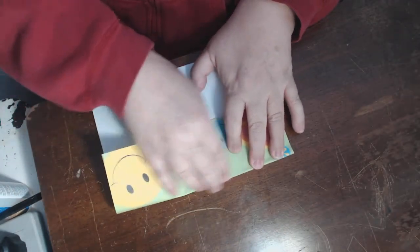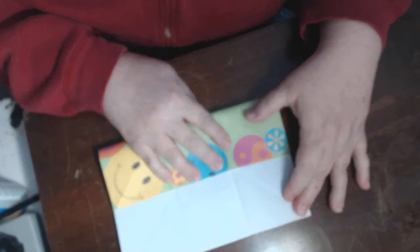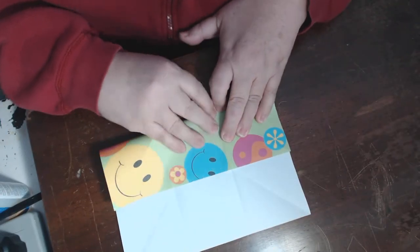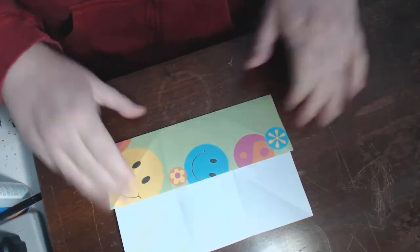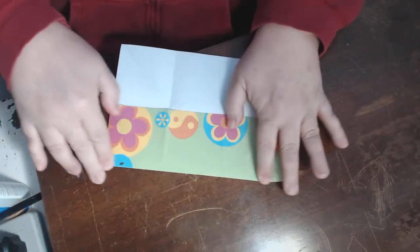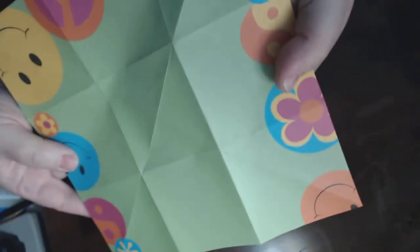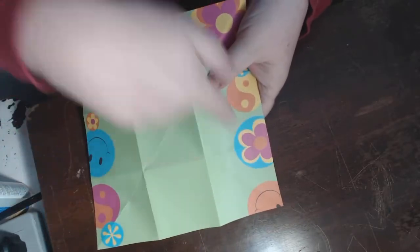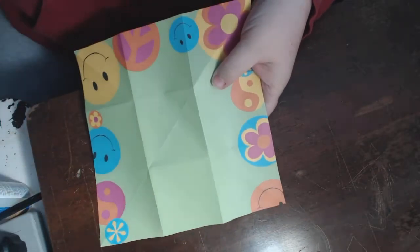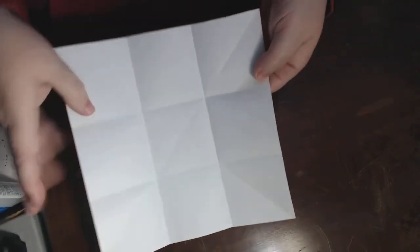Okay open it up, fold it the other way, open it up. Now you're gonna want to do the same thing going the other direction. So go that way, open it up. And what you should have, I'm gonna show you on the colored side because I think it's easier to see, is you should have nine squares here and then you should have an X going through the center.